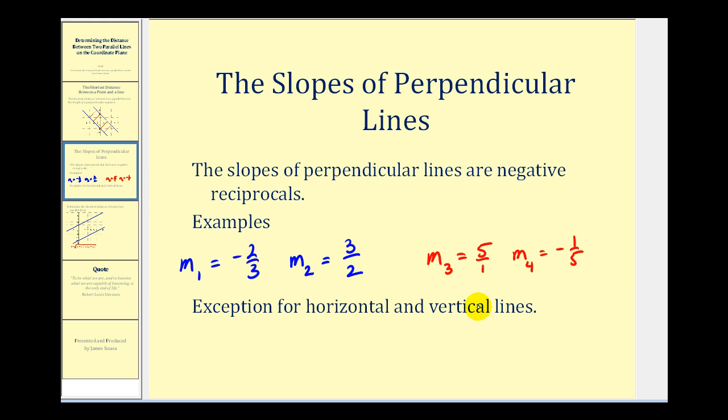Now the only exception to this rule is if we have horizontal and vertical lines. A horizontal line has a slope of zero, and a vertical line has an undefined slope. And, of course, horizontal and vertical lines are always perpendicular.